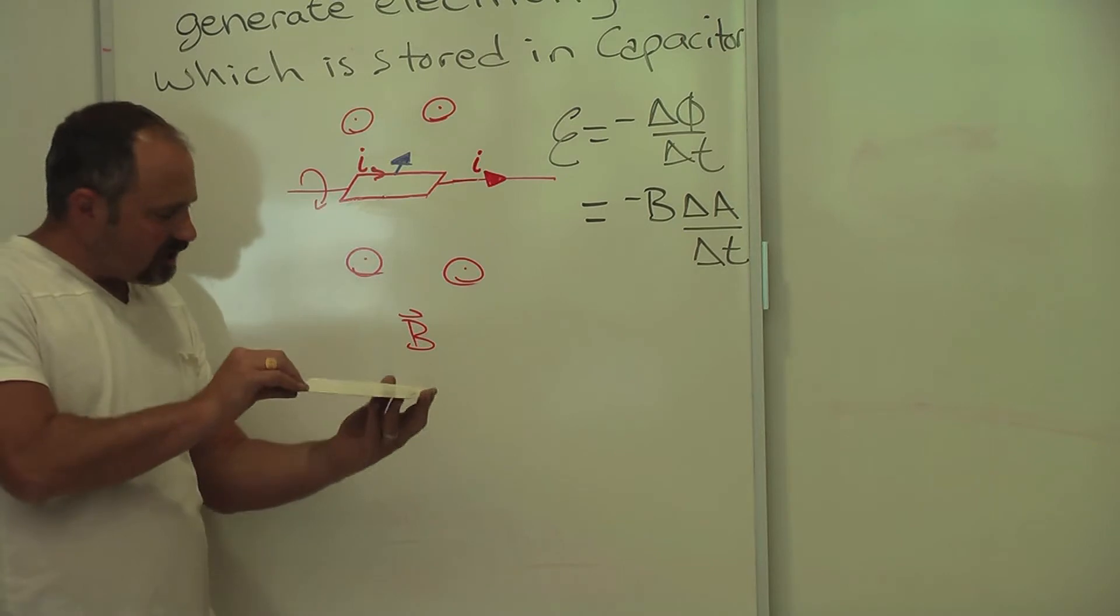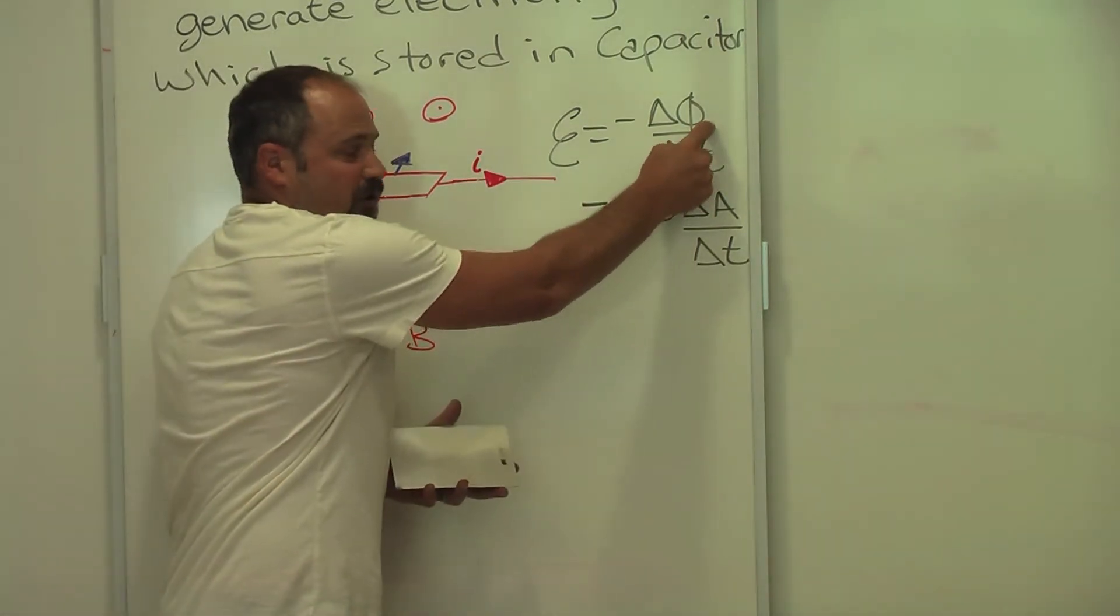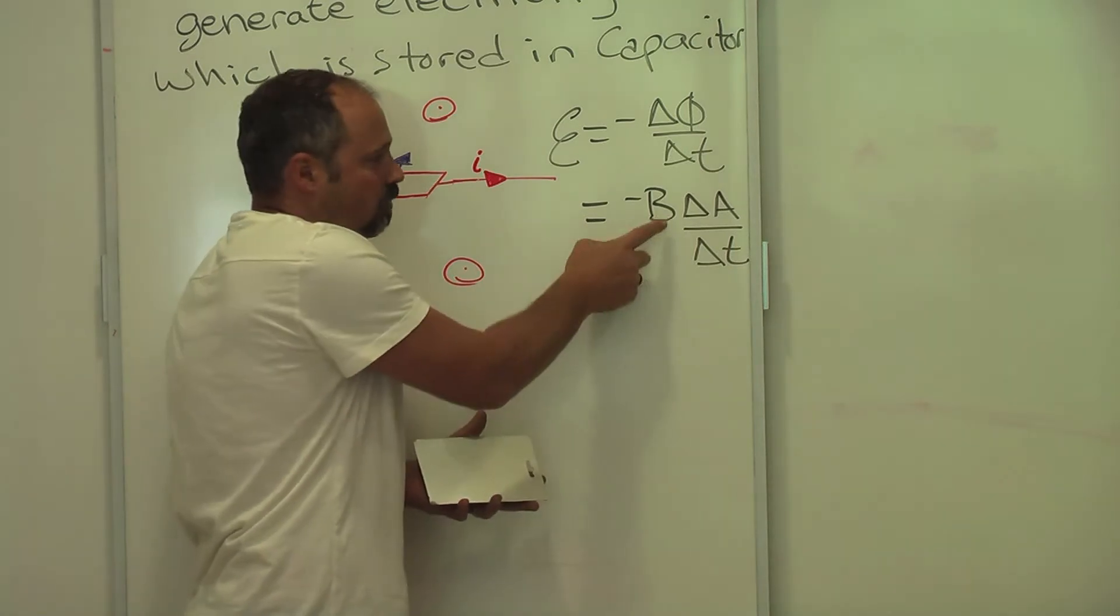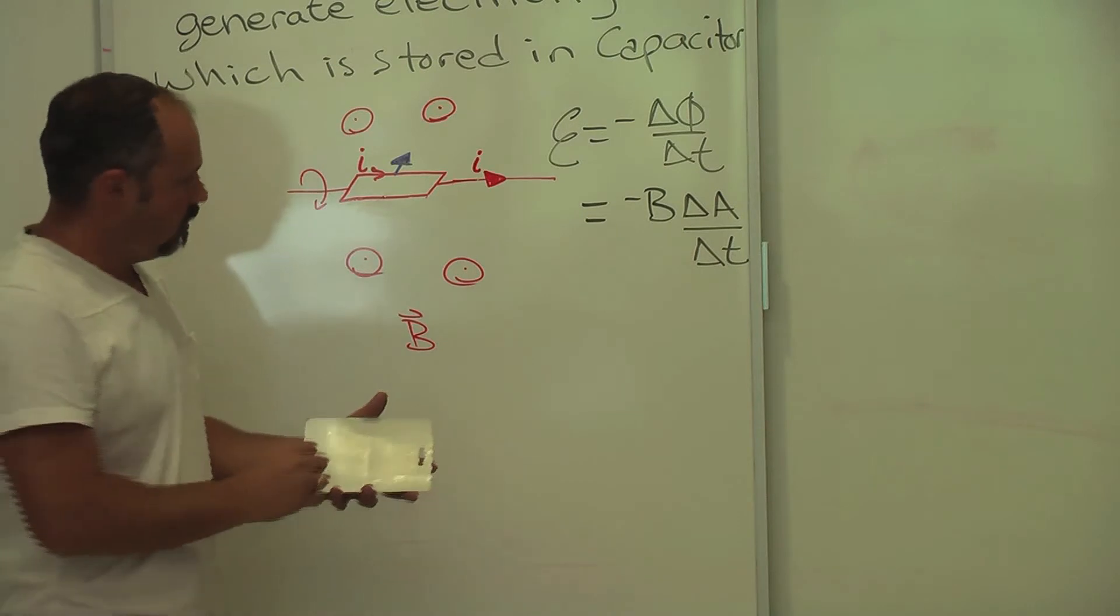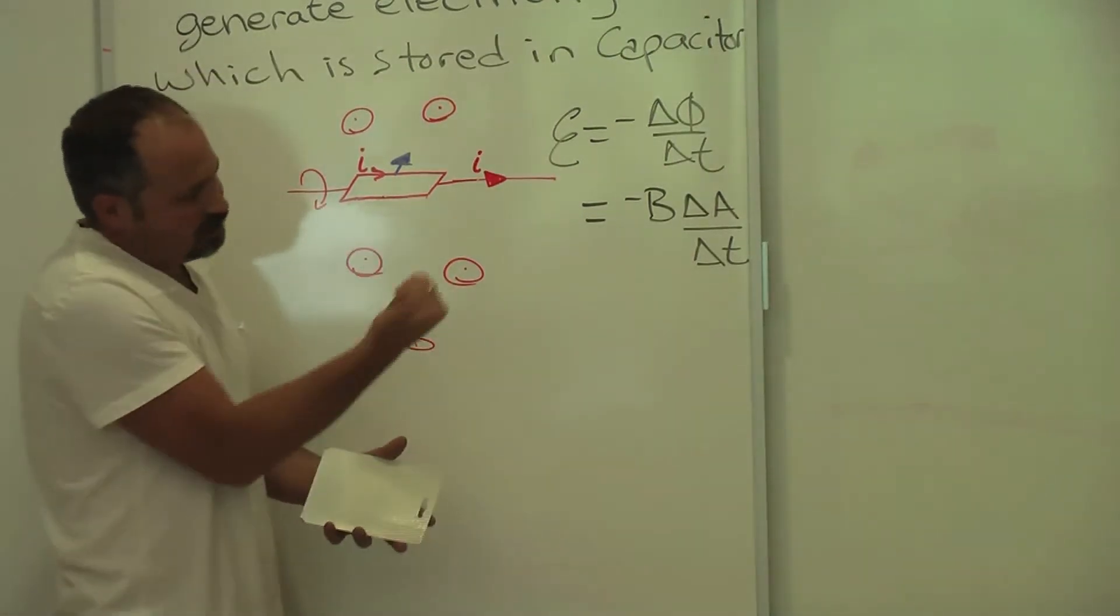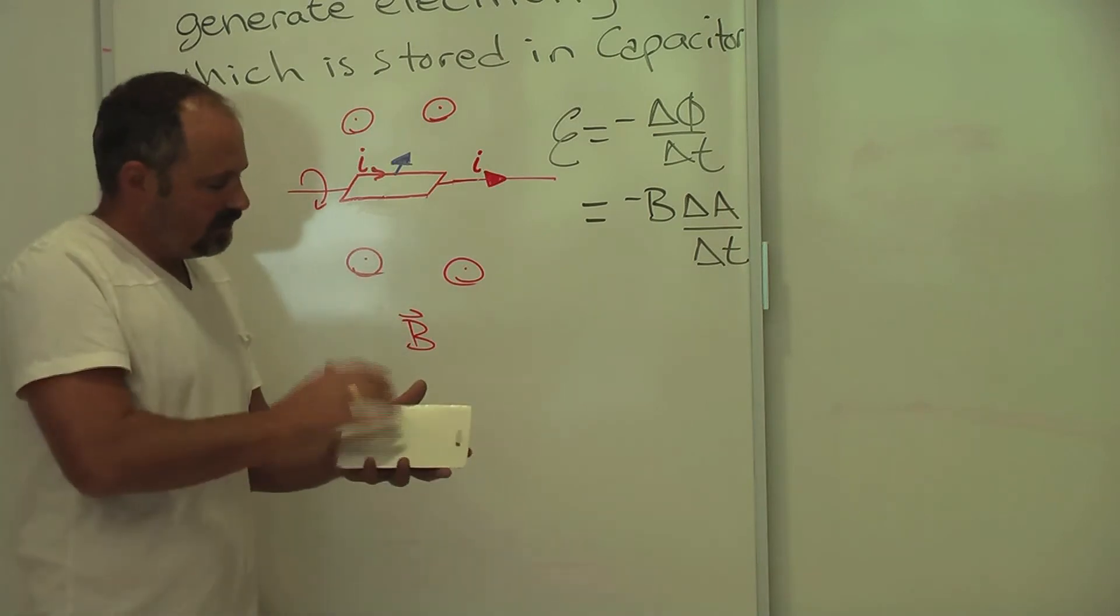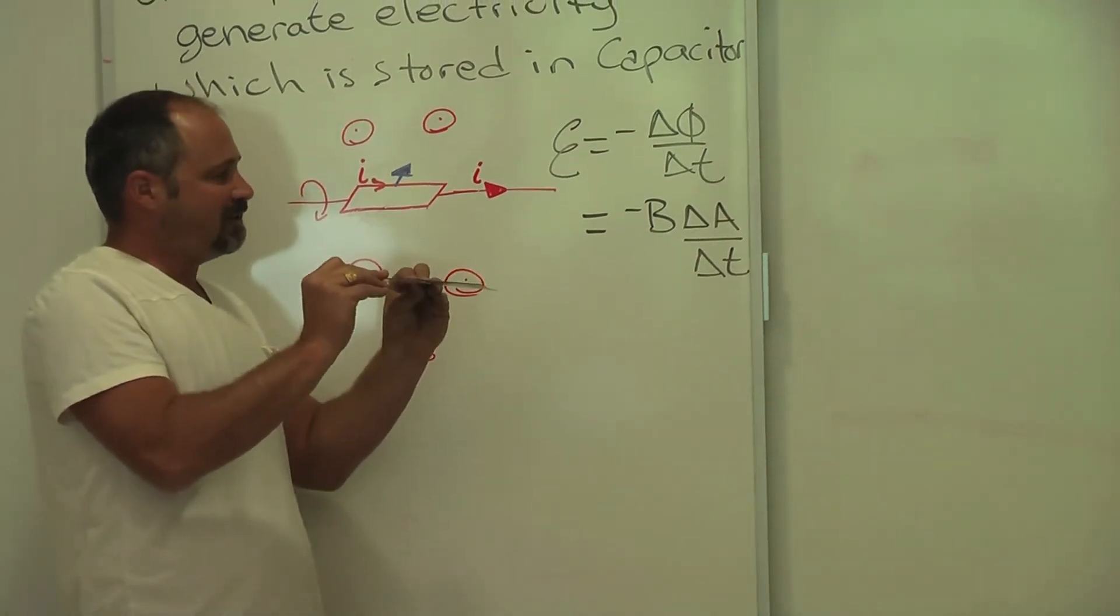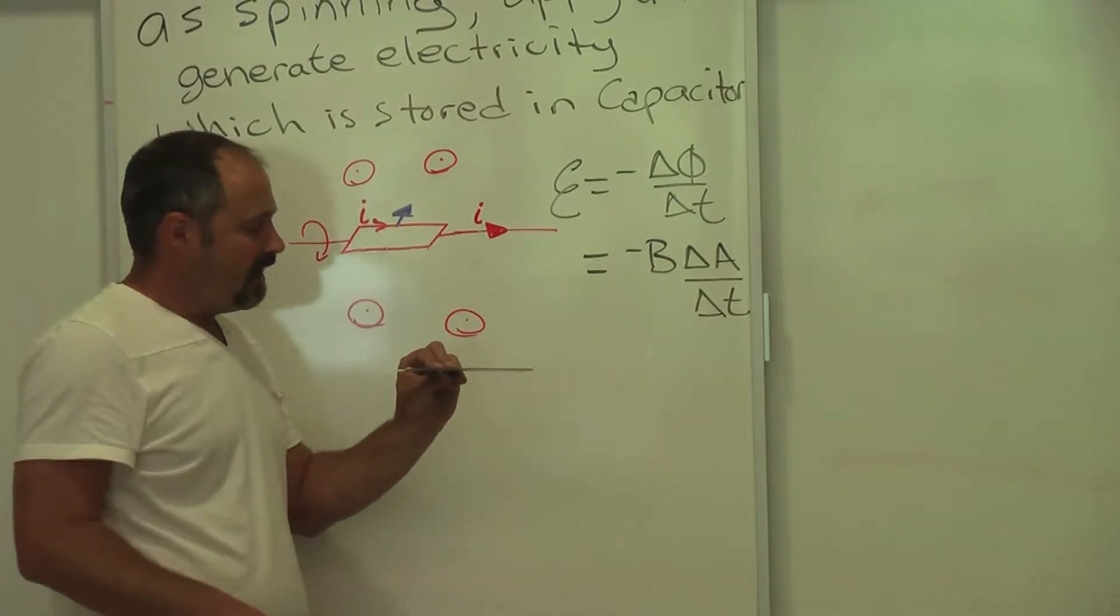And as this guy spins upward, the flux, flux is this symbol here phi, and flux is equal to the magnetic field times the area. That's what flux is. So the magnetic field is staying constant. It's just the magnetic field value that's pointing out of the board. But the area, when the coil's like this, there is no area facing the magnetic field.